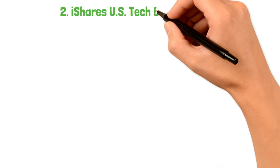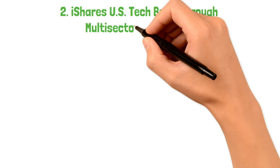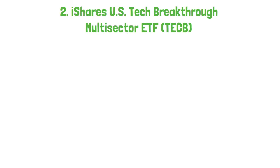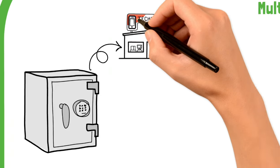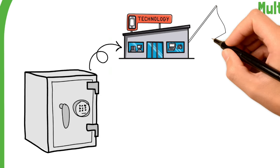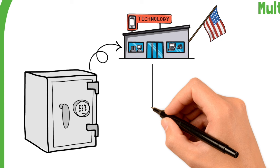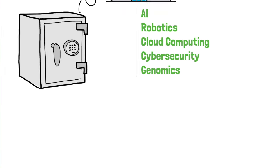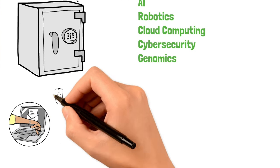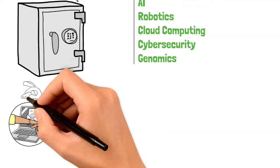The next ETF on our list is the iShares US Tech Breakthrough Multi-Sector ETF, ticker symbol TECB. This ETF is designed to invest in US companies making significant strides in various technology sectors, including AI, robotics, cloud computing, cybersecurity, and genomics. Now, let's explore why TECB is a good investment for those who are interested in AI.